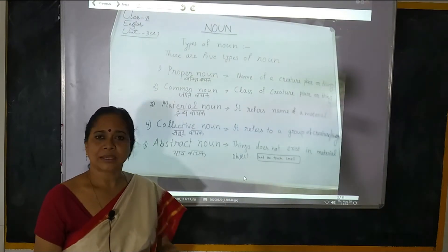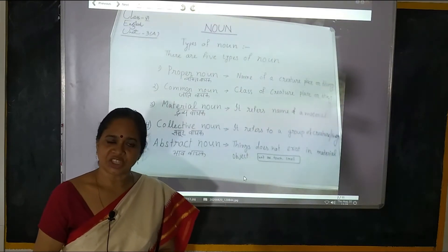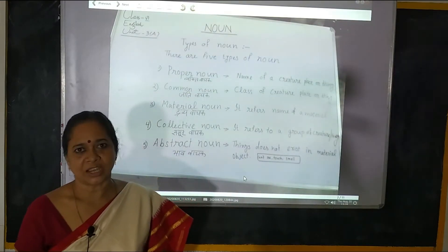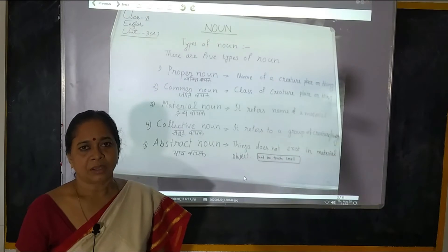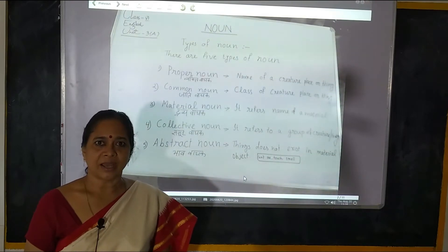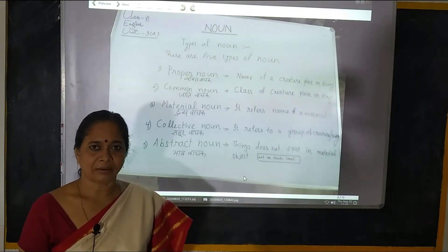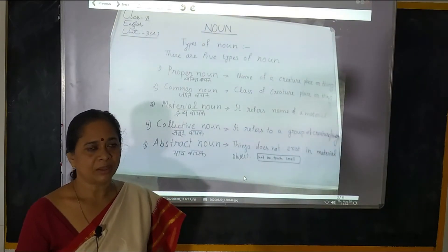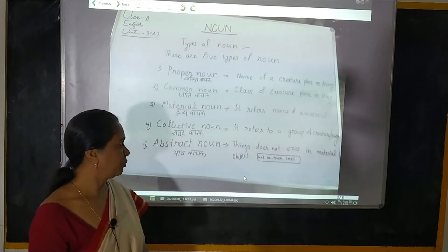Agla hai place — kisi jagah ka naam, desh ka naam, jila ka naam, province ka naam, koi sheher ka naam — ho jayega Proper Noun.